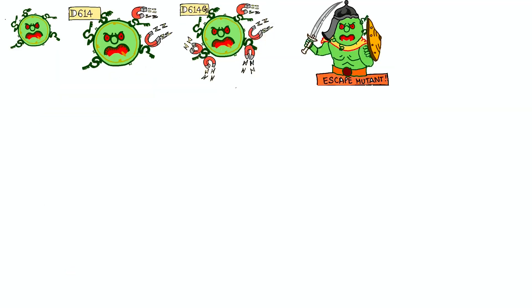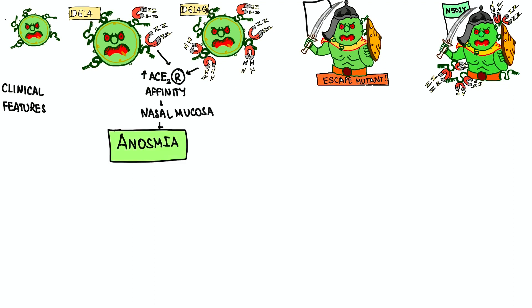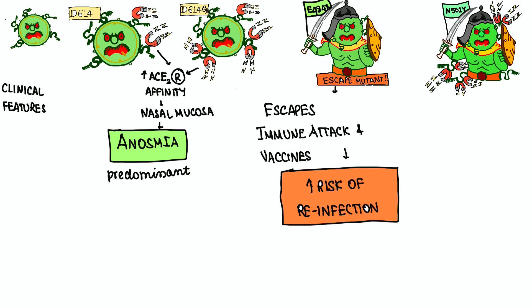With respect to clinical features, these super-lazy mutant viruses like the double escape mutants have increased affinity to S2 receptors in the nasal mucosa, so anosmia is a common feature. These escape mutants also evade immune attack and vaccines, which increases the risk of reinfection.